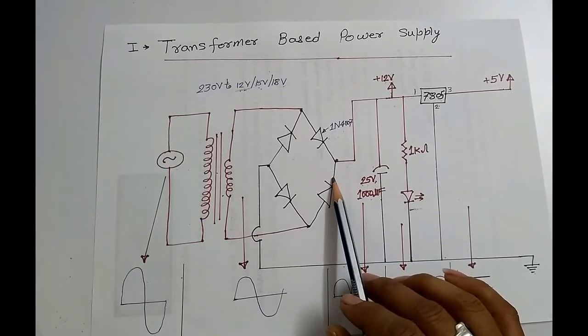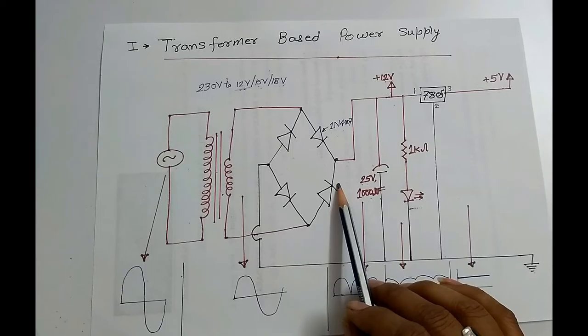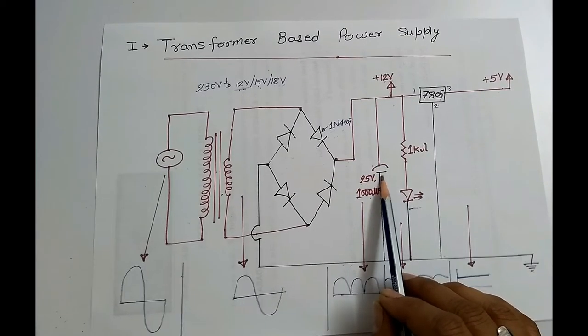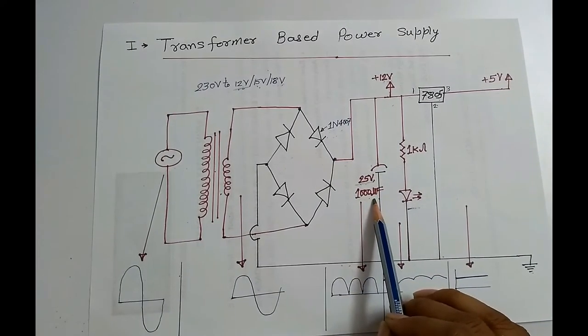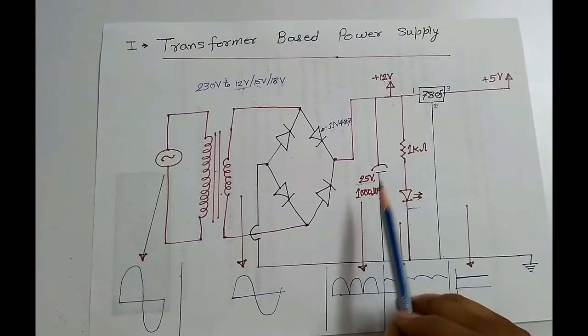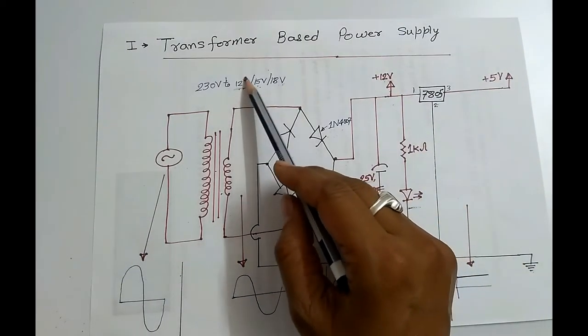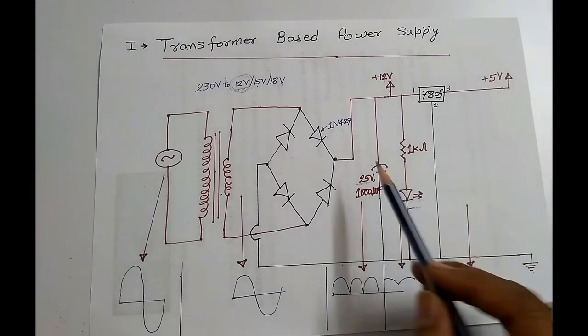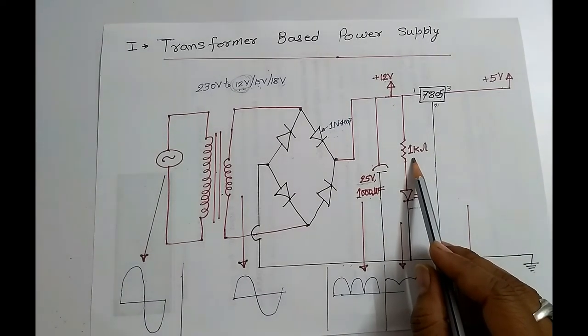After rectifier we get pulsating DC, not pure DC, so we use capacitor for filtering purpose. And capacitor rating is 25V. After capacitor we get 12V DC if our transformer is of 12V, means 230V to 12V. For 12V indication purpose there is one LED used with one kilo-ohm resistor.